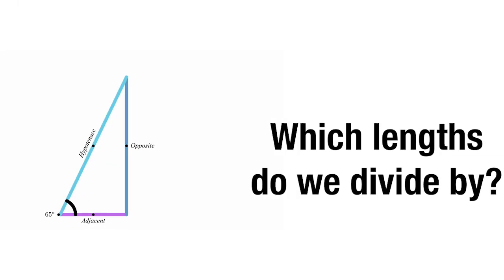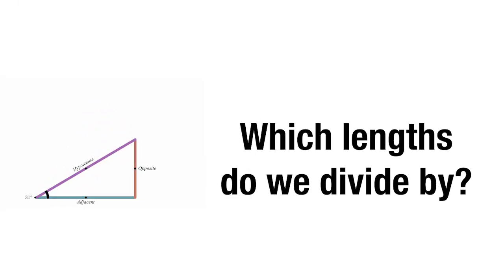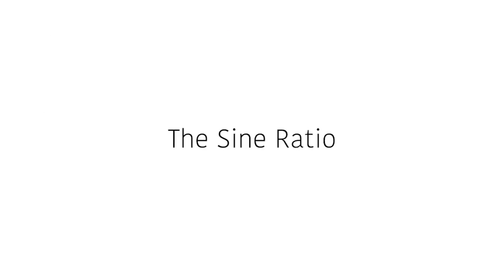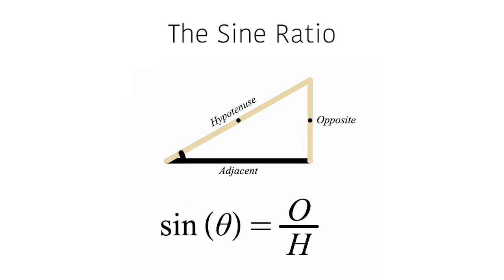But which of these three lengths do we specifically use? It was around 500 AD that the first official ratio was developed by Indian mathematician Aryabhata. The sine ratio. This measured the ratio of the opposite over the hypotenuse.